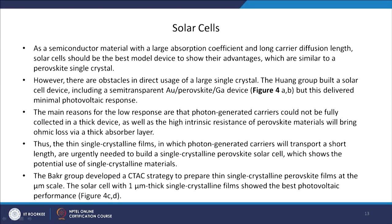In solar cells, as a semiconducting material with a large absorption coefficient and long carrier diffusion length, solar cells should be the best model device to show the advantages of perovskite single crystal. However, there are obstacles in the direct use of a large single crystal. One research group, Hoang's group, built a solar cell device including a semi-transparent gold perovskite gallium device, but this delivered minimal photovoltaic response. The main reasons: photon-generated carriers could not be fully collected in a thick device, and the high intrinsic resistance brings ohmic loss via thick absorber layer. Thus thin single crystalline films are urgently needed.